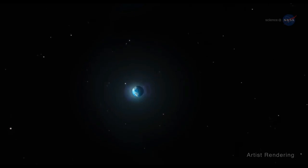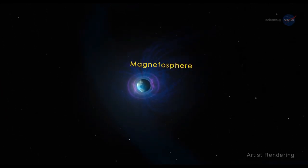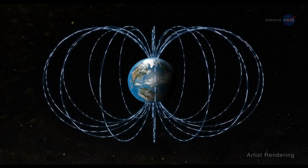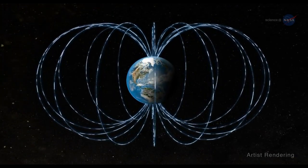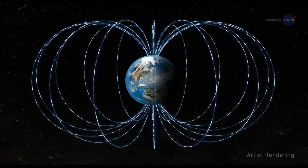Enveloping our planet and protecting us from the fury of the Sun is a giant bubble of magnetism called the magnetosphere. It deflects most of the solar material sweeping towards us from our star at one million miles per hour or more.